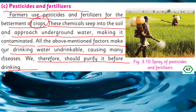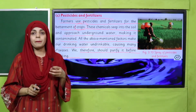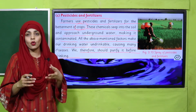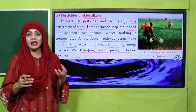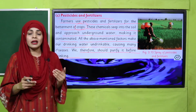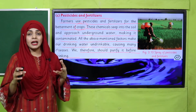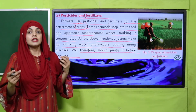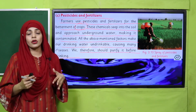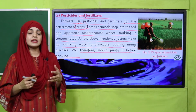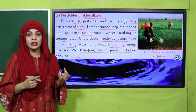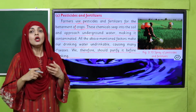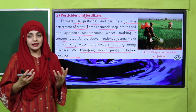My dear students, pesticides and fertilizers which are sprayed on plants to kill insects, and different fertilizers which speed up the growth of plants — when they are sprayed, they become part of underground water. In this way they pollute it, and that water is not fit for drinking. If you drink such water, many diseases can spread. We need to filter or purify the water before drinking.